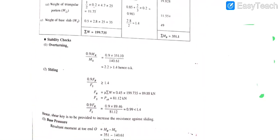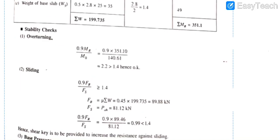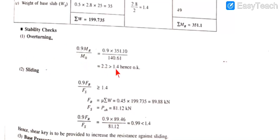Now we do the stability checks. For overturning: 0.9 × MR / MO should be ≥ 1.4. Applying values — MR / MO gives a value greater than 1.4. Hence the wall is safe against overturning.